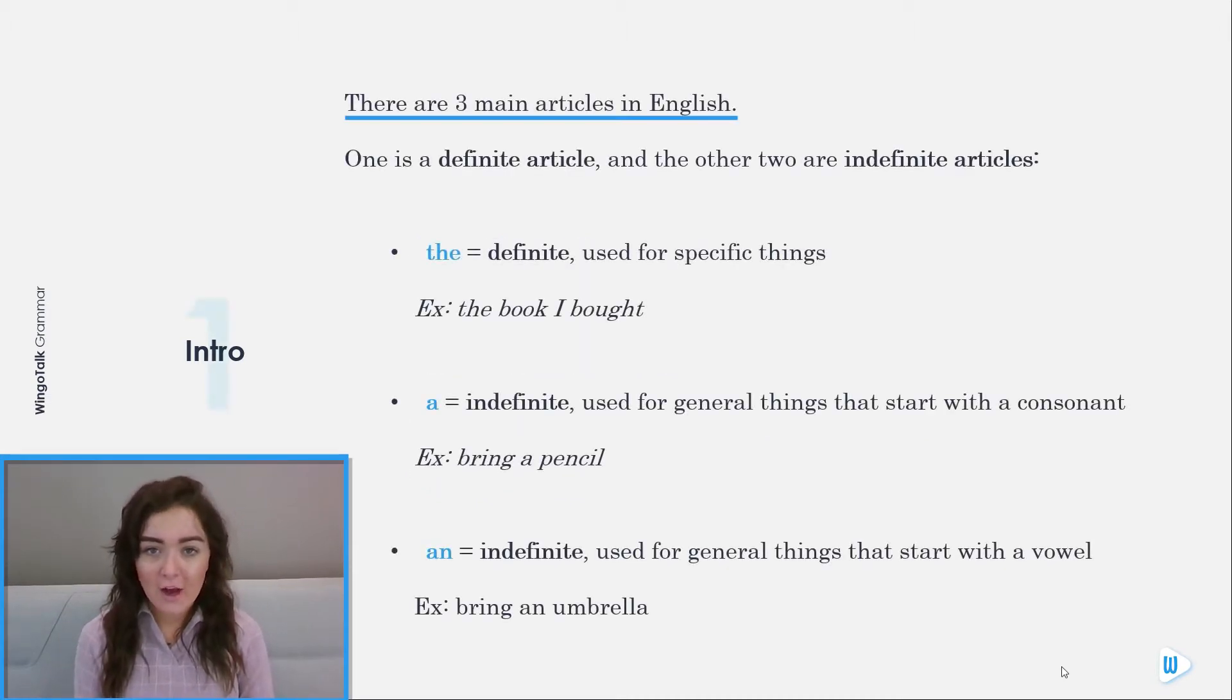There are three main articles in English. One is a definite article and the other two are indefinite articles. The equals definite, used for specific things. For example, the book I bought.